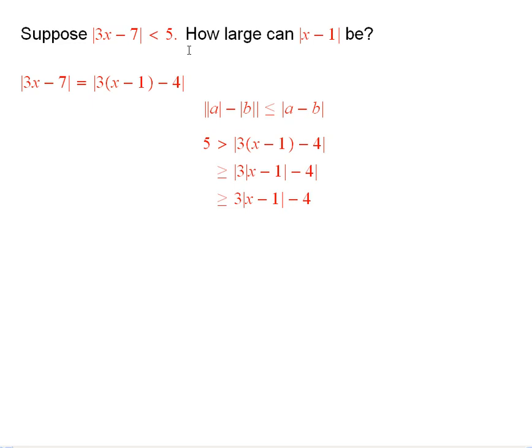So, I see that 5 is bigger than this. Remember, this is the same as absolute value of 3x minus 7. And now, this is bigger than or equal to the absolute value of the difference of the absolute values, like so.